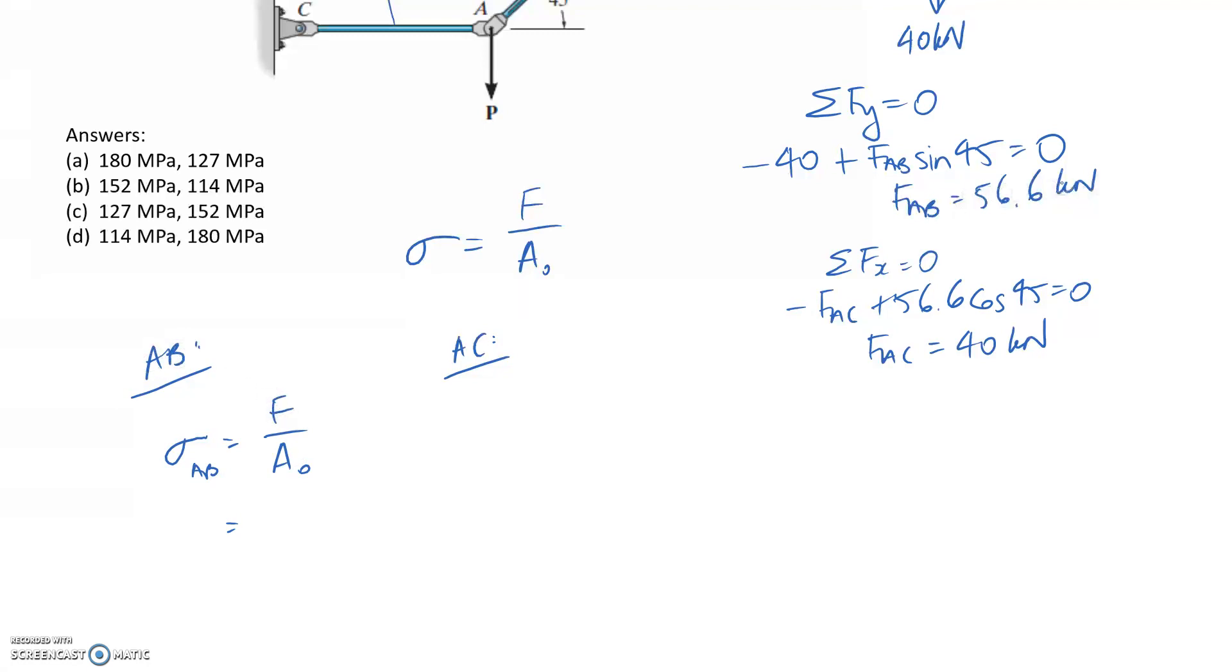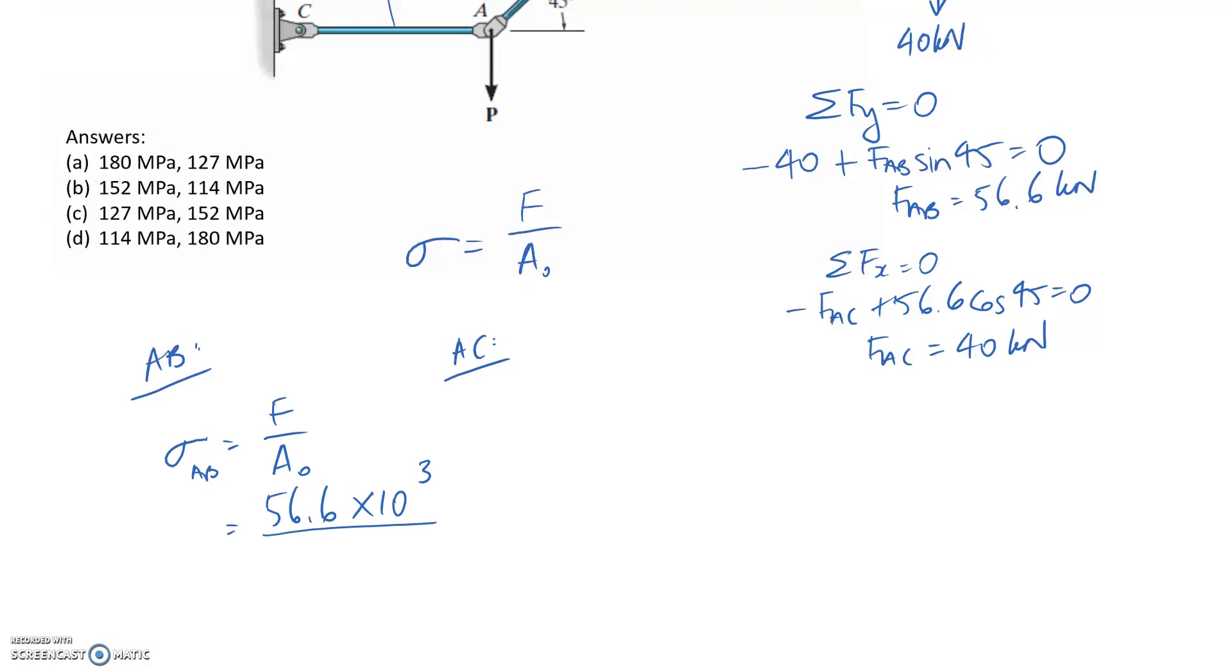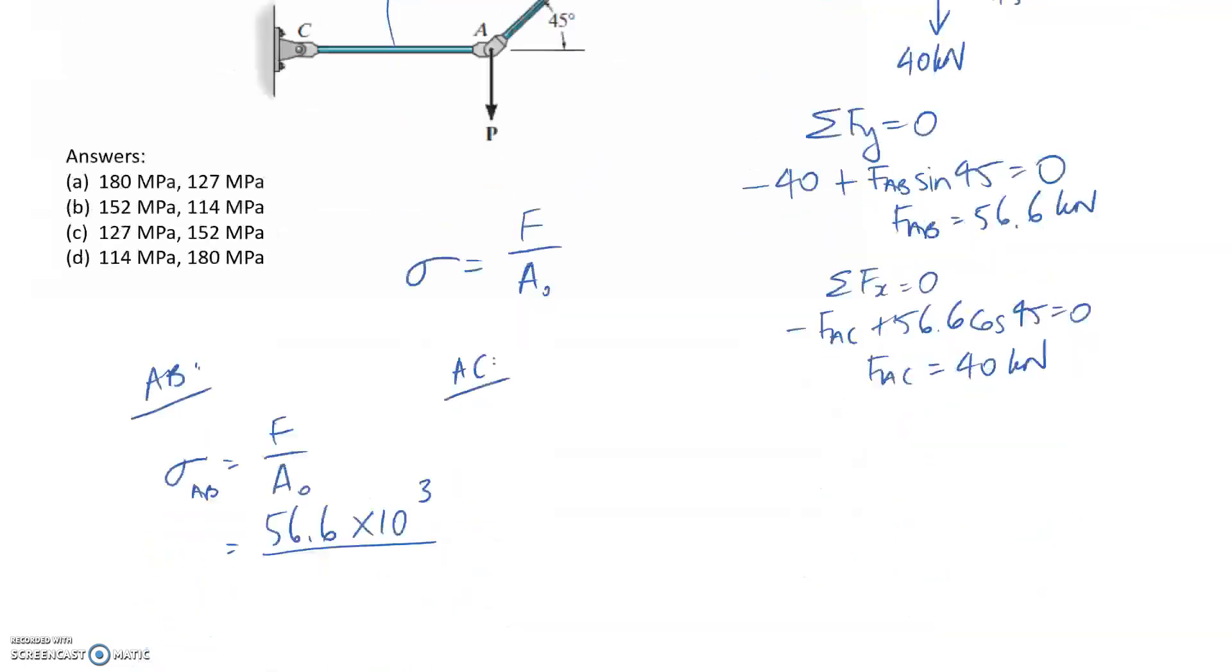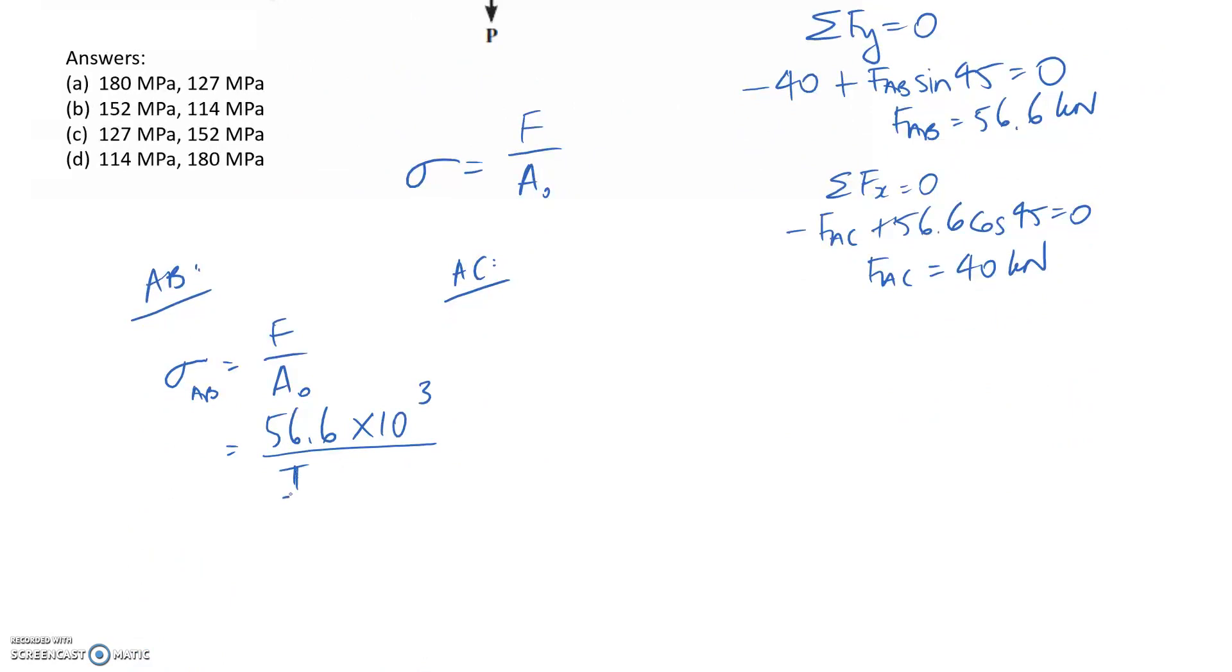We said that was 56.6 kilonewtons. To make sure that we get the units we expect out, I'm going to convert this into newtons, which means I need to times it by 10 to the 3. And then the cross-sectional area, the rods have a diameter of 20 millimeters. So area would then be pi on 4 d squared, so pi on 4 times 20 squared.